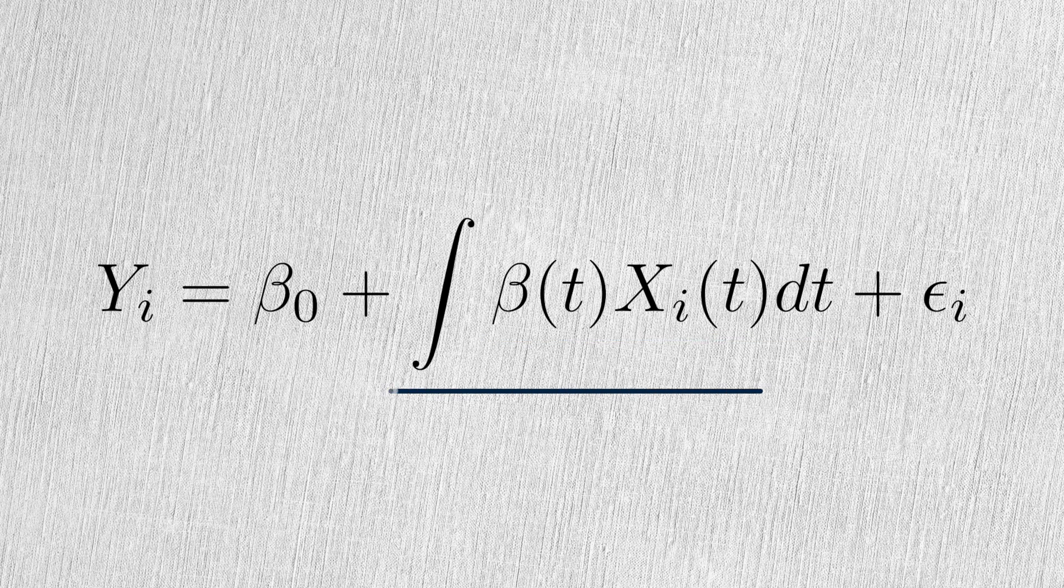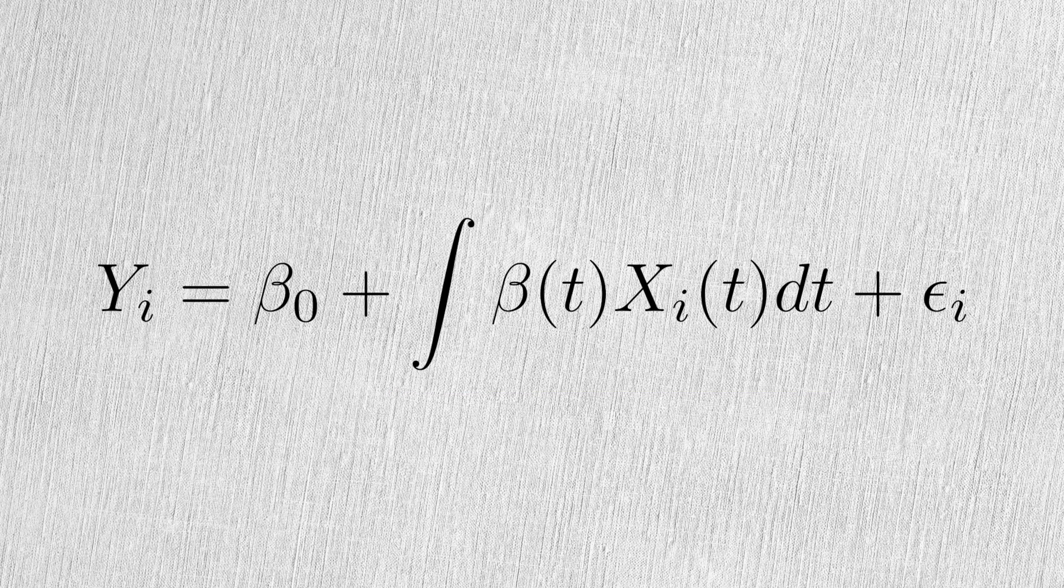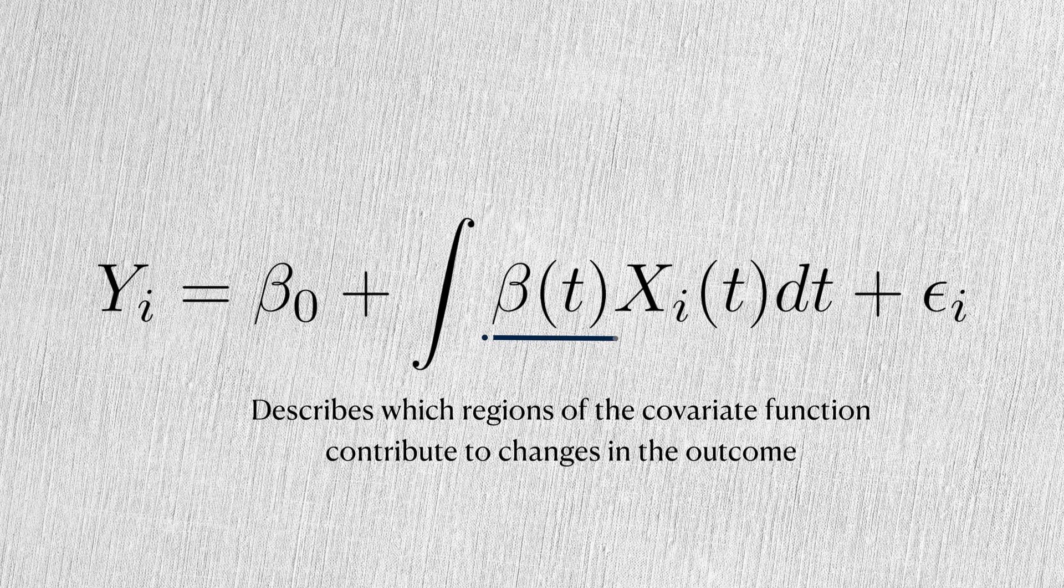Then, this integral indicates that we need the sum over all these little contributions over the values of the domain t. So overall, this coefficient function describes which regions of the covariate function contribute to reductions in the outcome and which regions contribute to increasing it.